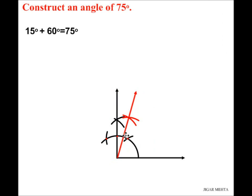What I've got here is 15 degrees between these two points, and this is already 60 degrees. So 60 degrees plus 15 degrees gives me a total of 75 degrees. So right from here till this point I have an angle of 75 degrees. That's how we construct an angle of 75 degrees.